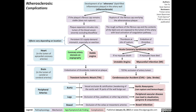In the legs, occlusion of the iliac, popliteal, and other leg arteries results in peripheral vascular disease, which can lead to claudication, gangrene, and amputation. In the bowel, occlusion of the celiac or mesenteric arteries results in bowel infarction, or death of the bowel tissue.